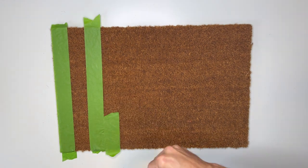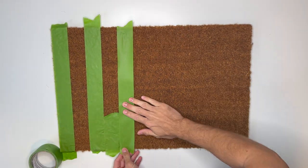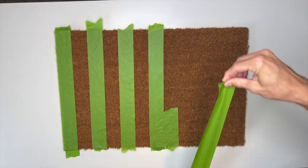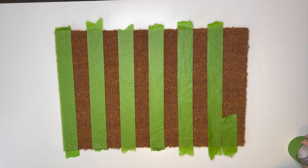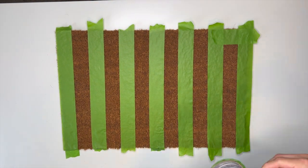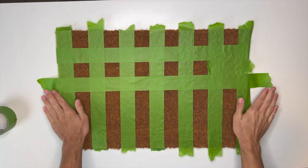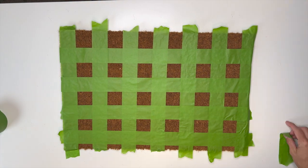In order to create kind of a consistent pattern, I am first applying a long strip to the left-hand side of the mat and then using a shorter piece of tape to serve as a spacer between the longer strips as I go across. Then I did the same thing going from top to bottom, but I started with the spacer piece first and then alternated going down from there.